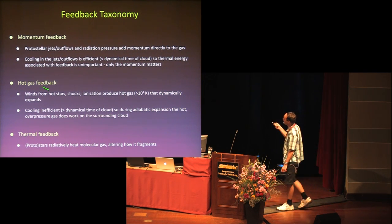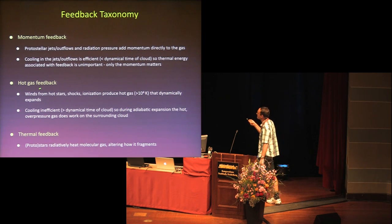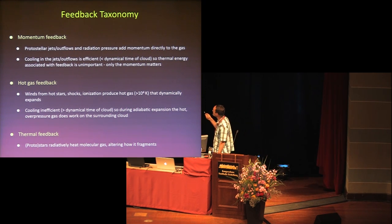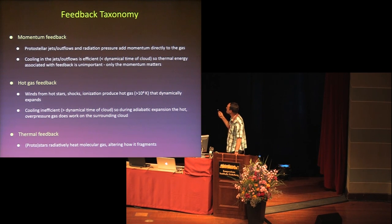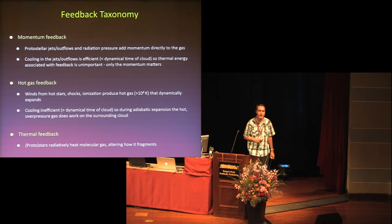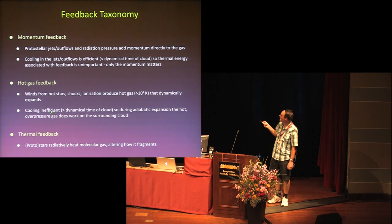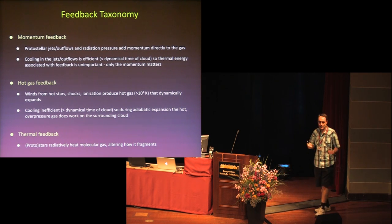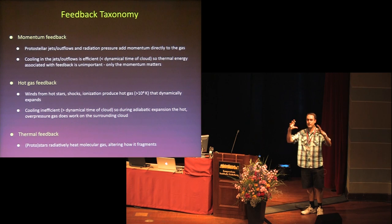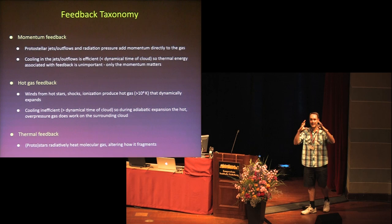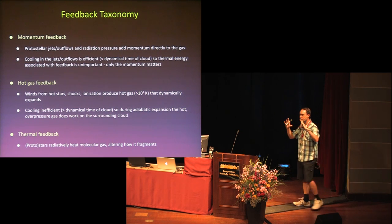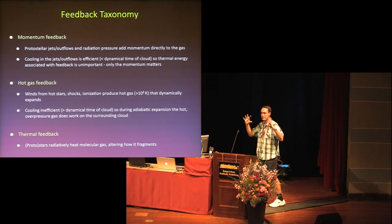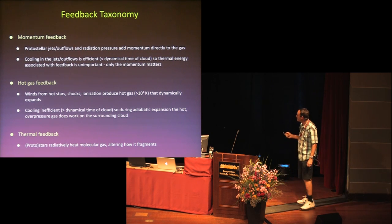That's different from hot gas feedback. In hot gas feedback — winds from hot stars, high-velocity shocks, ionization regions — you get very hot gas that cools very inefficiently, on timescales much larger than the dynamical timescale of the cloud. This hot gas is over-pressured and sweeps out molecular material in front of it, expanding adiabatically into the rest of the cloud. That can do a lot of damage potentially. The final form is thermal feedback, where stars or protostars radiatively heat the surrounding gas and change the way it fragments.